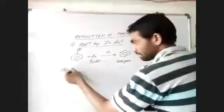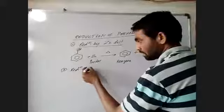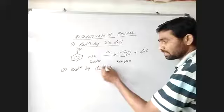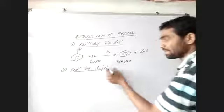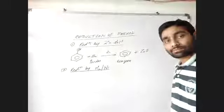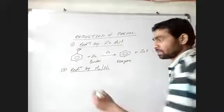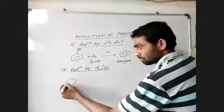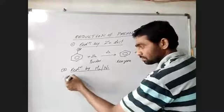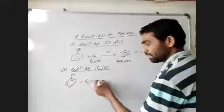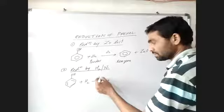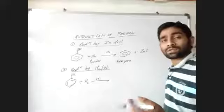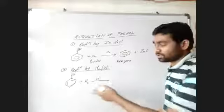The second method is reduction by hydrogen gas in the presence of nickel metal as a catalyst. We will take phenol and provide hydrogen gas in excess in the presence of nickel as a catalyst. Temperature and pressure will be required because we are using hydrogen gas.